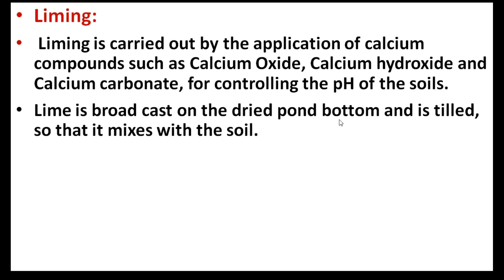Next is liming. Liming is carried out by the application of calcium compounds such as calcium oxide, calcium hydroxide, and calcium carbonate for controlling the pH of the soil. Lime is broadcast from the dried pond bottom and is tilled so that it mixes with the soil.